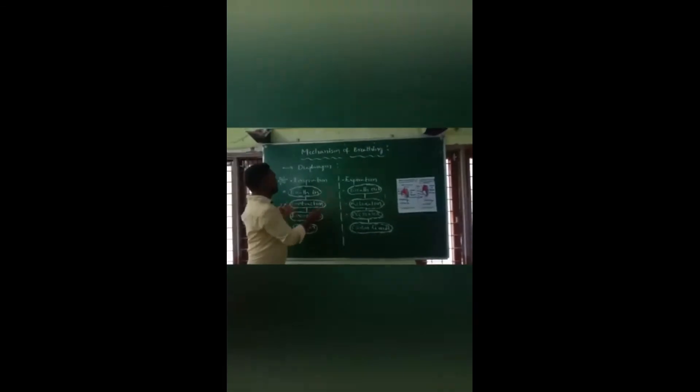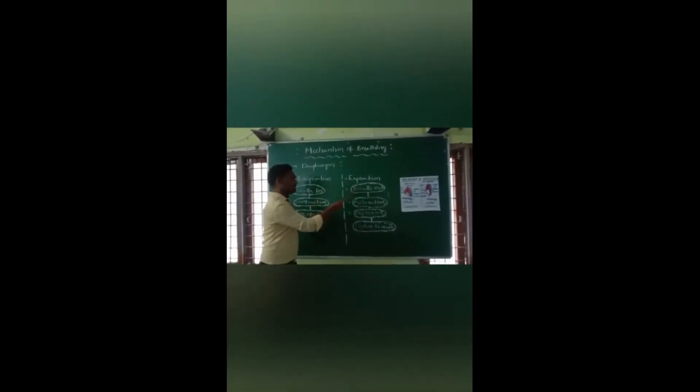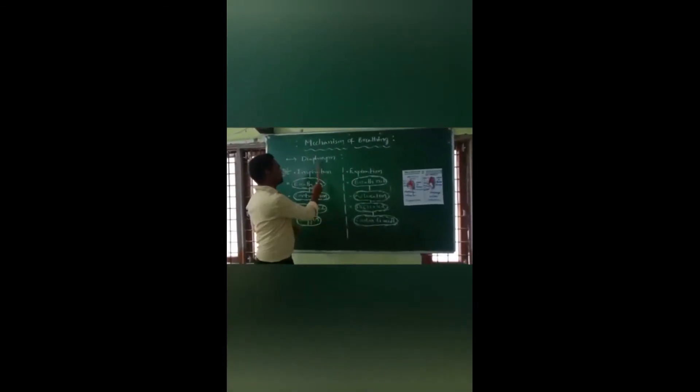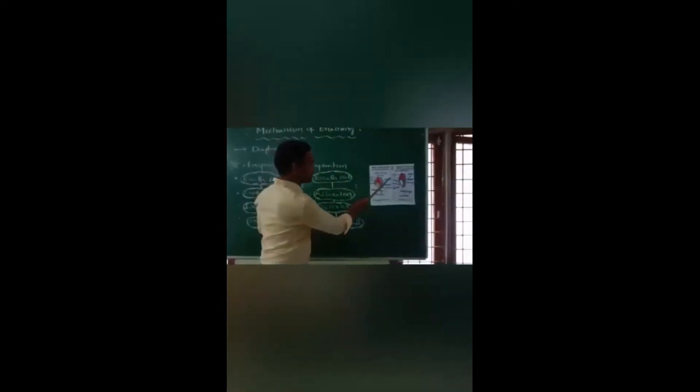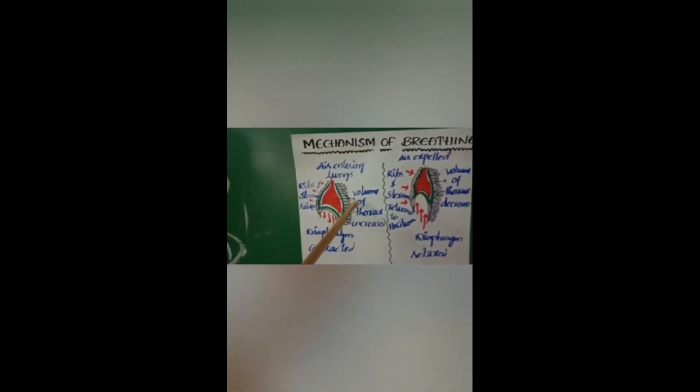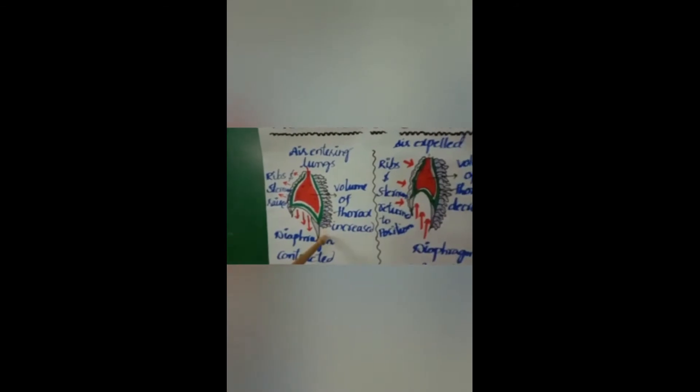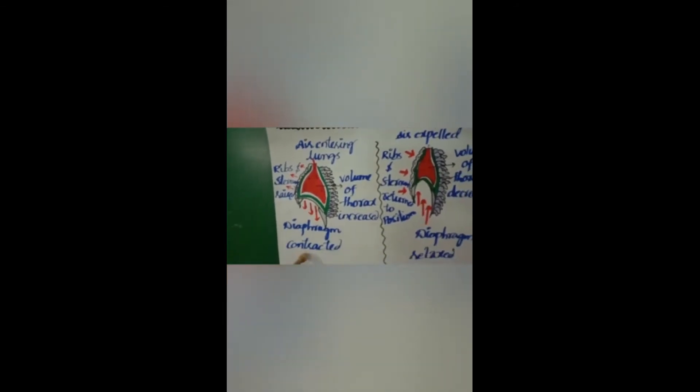This is very simple. Inspiration and expiration, activated by diaphragm. Diaphragm is a very important tool. You can observe this picture, mechanism of breathing. Air is entering into lungs. You can see volume of the lungs increase. Ribs and sternum rise. Volume of the thoracic cavity and lungs is increased. Now, diaphragm is contracted. As I just said, this is called inspiration.